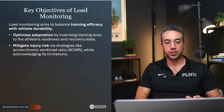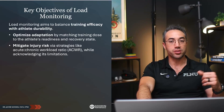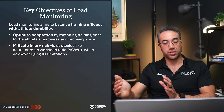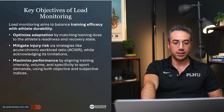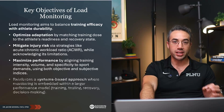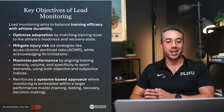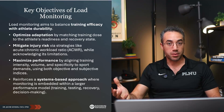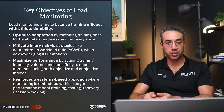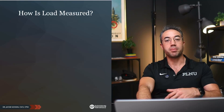There are a lot of different ways to calculate ACWR in the literature. We also want to maximize performance by aligning training intensity, volume, and specificity to sport demands using both objective and subjective indices. This reinforces a systems-based approach where monitoring is embedded in a larger performance model. We're being methodical and scientific, so that when we track using GPS, we can make decisions based on quantitative data and make better decisions about training.